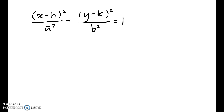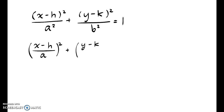We can start by rewriting this a little. When we have x minus h squared, we find that the a on the bottom is also squared. So in reality, it's just x minus h over a, and the whole thing is squared. The same thing goes for y: y minus k over b, squared. Adding these two together, they sum up to 1.